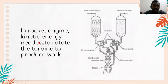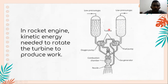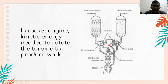In a rocket engine, kinetic energy is needed to rotate the turbine to produce work. From this diagram, the rocket engine is used to create the greater thrust force needed for the rocket to be launched. There are two pumps in the system: the oxygen pump and the fuel pump. The pumps take in propellant at low pressure, raise its pressure, and send it to the combustion chamber, driven by the gas turbine. As fuel and liquid oxygen pass through the turbine, work is done against the blades attached to the shaft, producing kinetic energy that causes the shaft to rotate and the turbine to produce work.